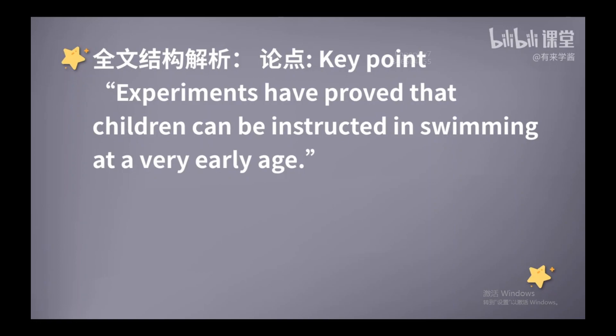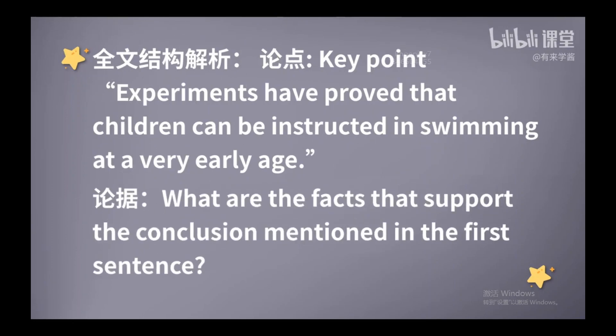对了，又是先判断后细节。此外呢，这句话我们还可以学到一个句型：Experiments have proved that... 实验证明，后面加上结论，这就是一个表达观点、表达结论的重要句型。给出论点之后呢，下面最重要的任务就是要摆事实来证明这个重要的论点。那我想问大家，what are the facts that support the conclusion mentioned in the first sentence？在文章里提到了哪些事实来证明第一句话中所提到的结论呢？